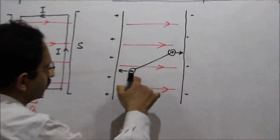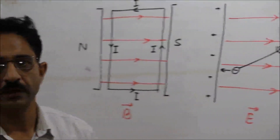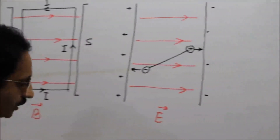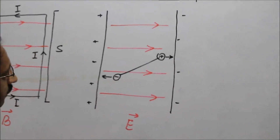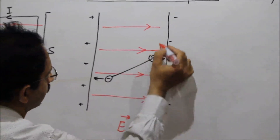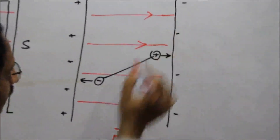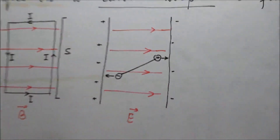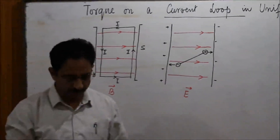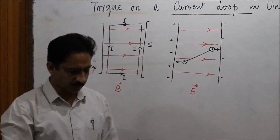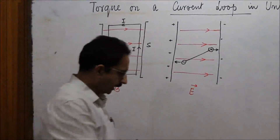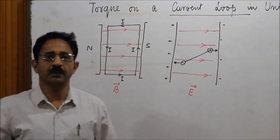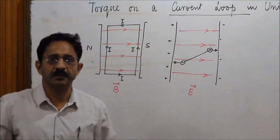These two forces tend to cause a rotation. When we think about rotational motion, we think about its cause. The cause of rotational motion is always a couple. A couple comprises two forces which act at two different points on a rigid body, with different lines of action.